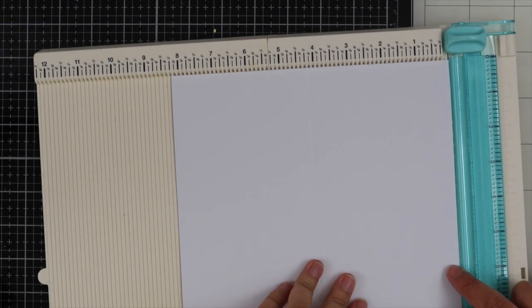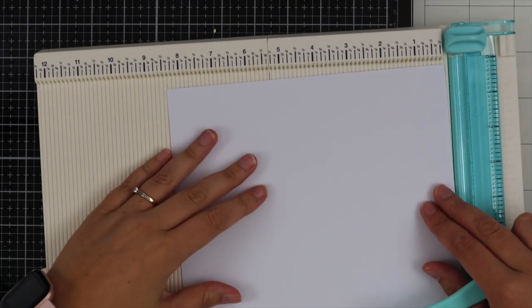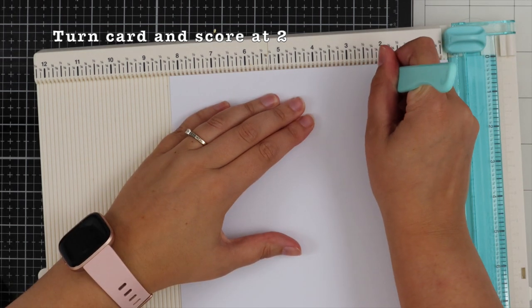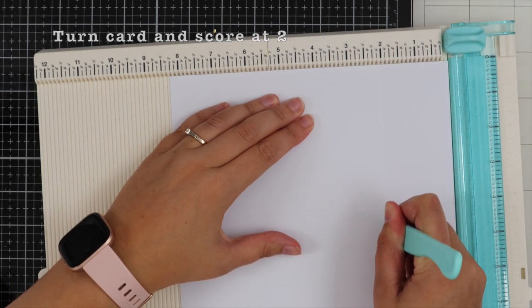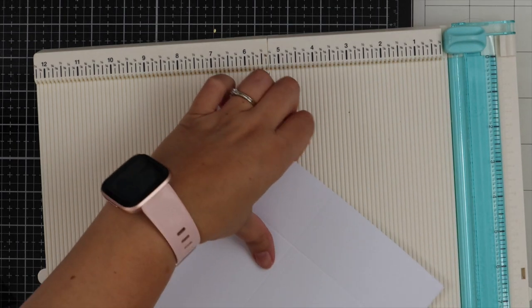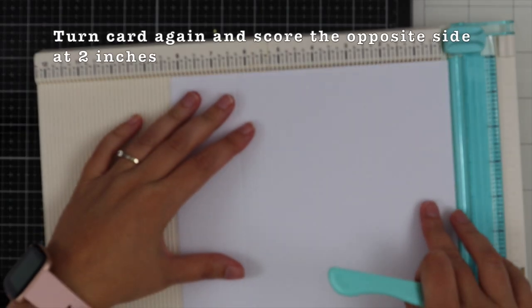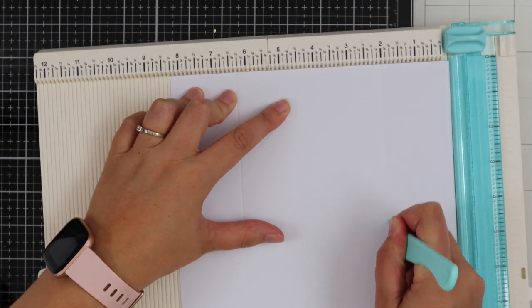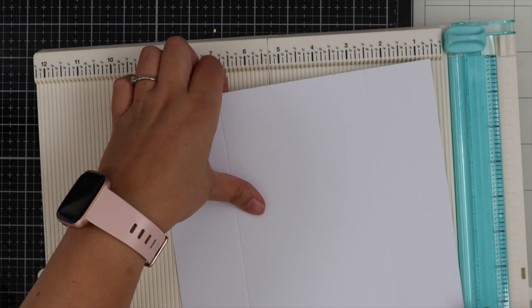Taking my scoring tool, I'm scoring this at four and one-eighth inches, scoring all the way down. Then I'm turning my piece of card and scoring at two inches, going all the way down to the bottom.